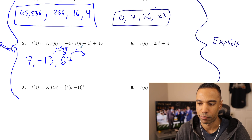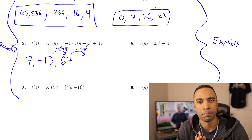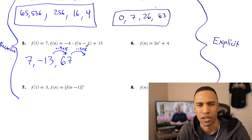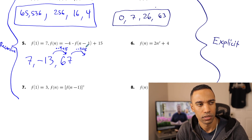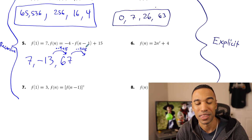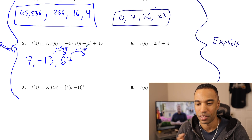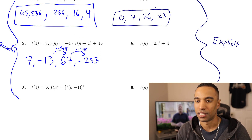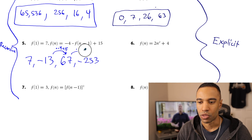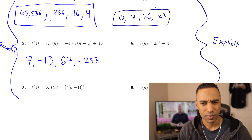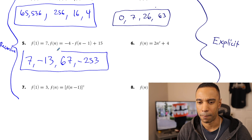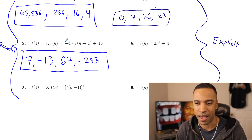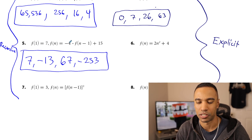Take negative 13, multiply it by negative 4: that's 52, plus 15 is 67. This is a really strange rule — could you figure out what's happening on your own? Highly doubtful. The last term: 67 times negative 4 is negative 268, plus 15 is negative 253. So the four terms of that sequence are 7, negative 13, 67, negative 253. Interesting that this sequence oscillated — the negative 4 had quite a lot to do with what happened.